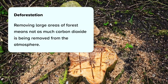Removing large areas of forest means not as much carbon dioxide is being removed from the atmosphere. Trees and plants remove carbon dioxide from the atmosphere for photosynthesis. About 36 soccer fields worth of trees are lost each minute due to deforestation. This means we have far fewer trees now than in the past, so less carbon dioxide is being removed from the atmosphere.